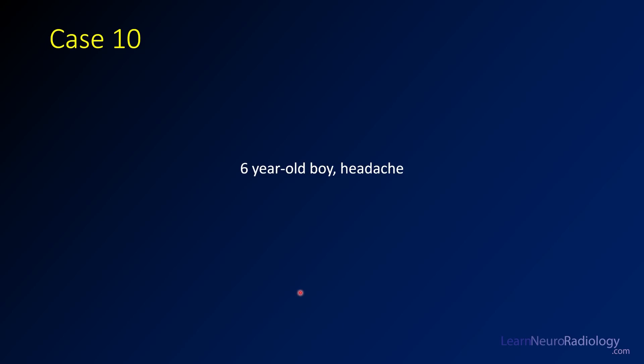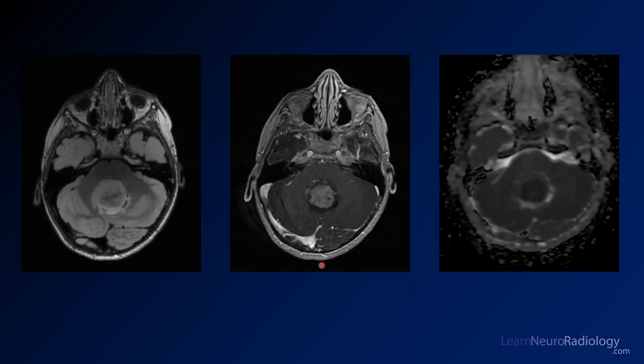Welcome back to Learn Neuroradiology. For case number 10 of our brain tumor board review, we have a pediatric case — a six-year-old boy presenting with headache. We have some images from an MRI through the posterior fossa of this six-year-old boy. This is a FLAIR image, this is a post-contrast T1.